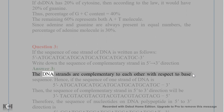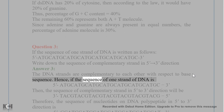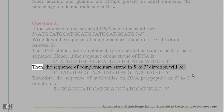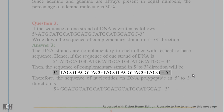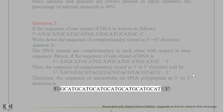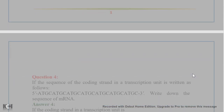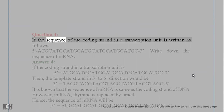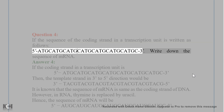Answer 3. The DNA strands are complementary to each other with respect to base sequence. Hence, if the sequence of one strand of DNA is 5'-ATCATCATCATCATCATCAT-3', the complementary strand written in 5' to 3' direction is 5'-ATGATGATGATGATGATGAT-3'.